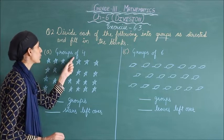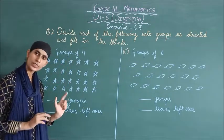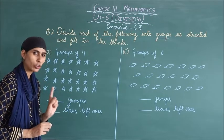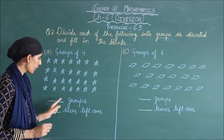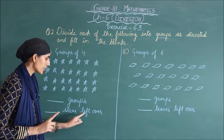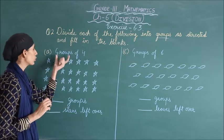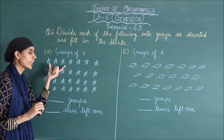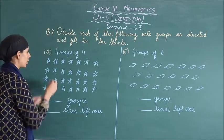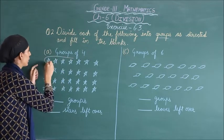So your A part is groups of 4. Aapko stars ki picture dikh rahi hai. To hume 4-4 stars ka ek-ek group banana hai. Aur uske baad hum likhenge hamare paas kitne groups aa gaye, aur kitne stars left over hain. So groups of 4 mein ek group mein 4 stars lene hain — counting karenge: 1, 2, 3, 4 — 4 stars se hamara pehla group ban gaya.